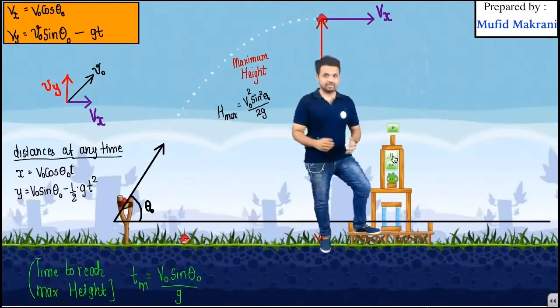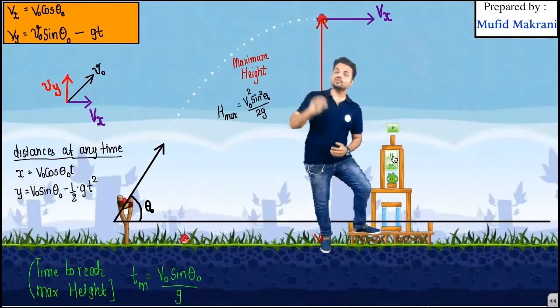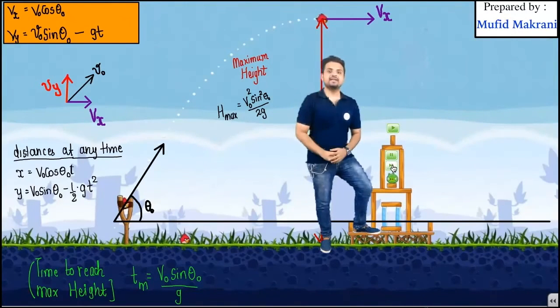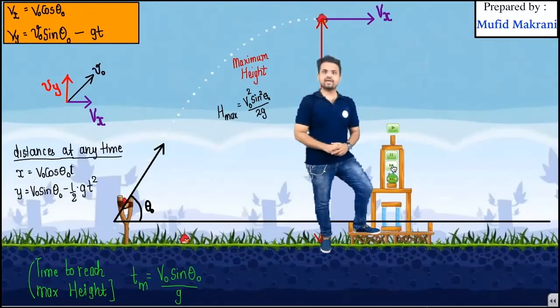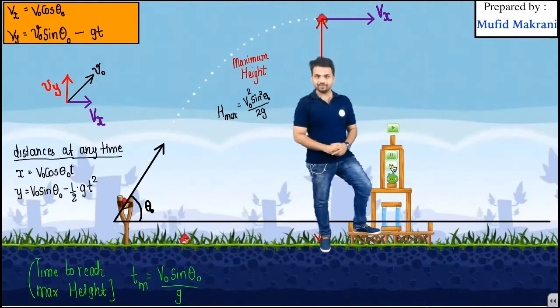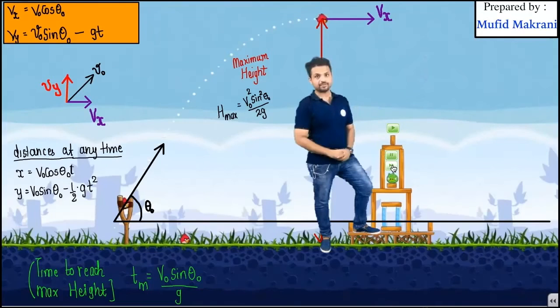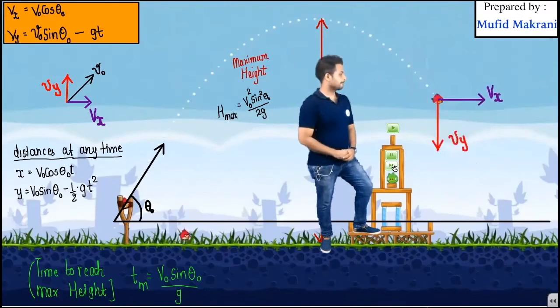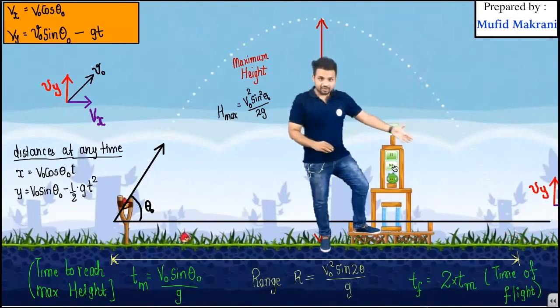Before that, just notice the formula for the maximum height. It is given by v naught square sine square theta by 2g. Now let us see the remaining motion as soon as my projectile reaches the ground.